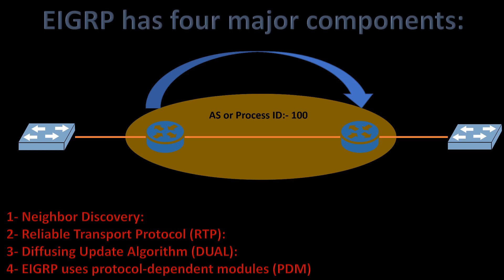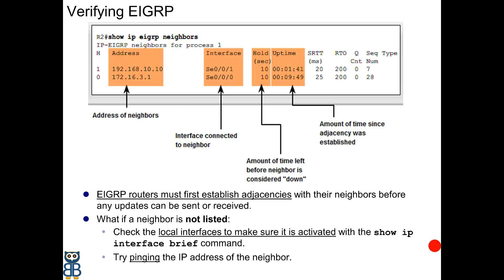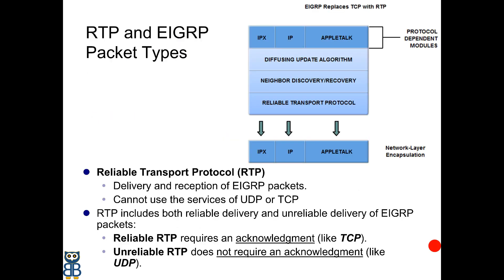Neighbor discovery is used by routers to learn about other routers on their directly attached networks. Routers can determine if neighbors are unreachable through hello packets, after which neighboring routers can exchange routing information. Reliable Transport Protocol, or RTP, is in charge of the guaranteed and ordered delivery of EIGRP packets. RTP supports both unicast and multicast delivery. When packets do not need to be acknowledged, such as hello packets, the destination IP address is 224.0.0.10.